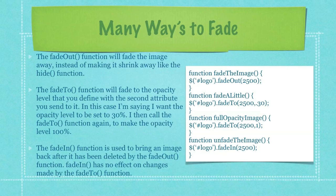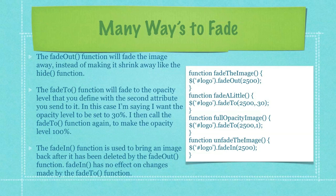The Fade Out function will fade the image away instead of making it shrink away like the Hide function does. The Fade To function will fade to the opacity level that you defined with the second attribute you sent to it. In this case, I'm saying I want the opacity level to be set to 30%. I then call the Fade To function again to make the opacity level 100%. The Fade In function is used to bring an image back after it has been deleted by the Fade Out function. And Fade In has no effect on changes made by the Fade To function.